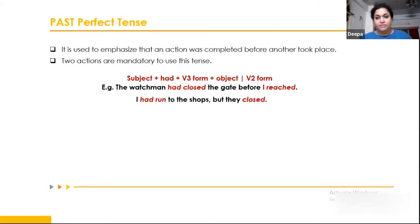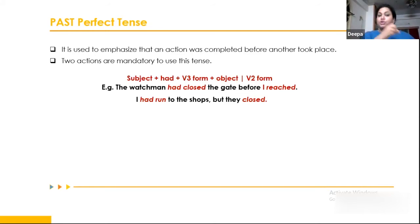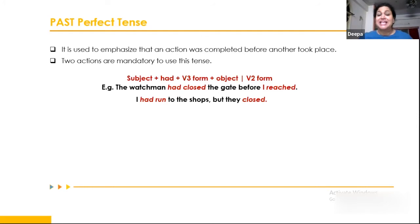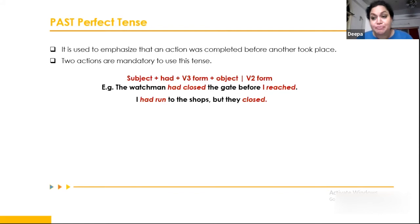Past perfect tense requires two actions happening simultaneously — it is mandatory. Without two actions, you cannot use past perfect tense. The first action takes past perfect tense and the second takes simple past tense. For example: 'The watchman had closed the gate before I arrived.' 'I had run to the shops but they closed.' If you don't have two actions, you should use simple past tense instead.